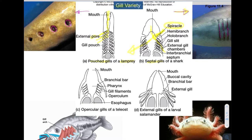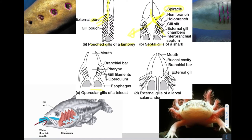A third anatomical variety is the opercular gill, found in your typical teleost fish — the type you most commonly think of as a fish. They have a bony shield called an operculum that protects the gills underneath it; to see the gills you need to pull the operculum away. The mechanism is still the same unidirectional flow: water goes in through the mouth, over the gill curtain, and out through the exit behind the operculum.